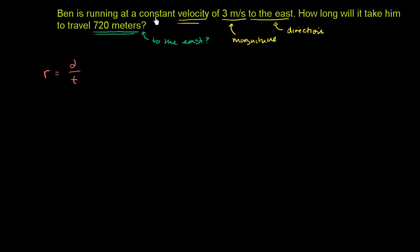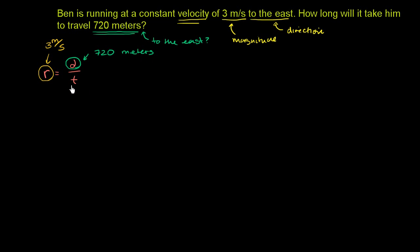In this problem, they're giving us the rate — 3 meters per second — and they're also telling us the distance, and we need to figure out the time. The distance is 720 meters. So we have 3 meters per second equals 720 meters over some change in time.